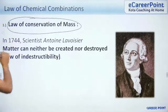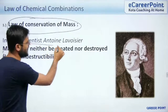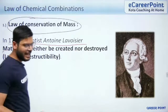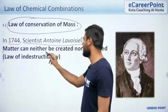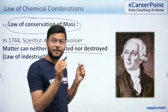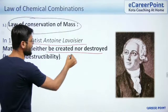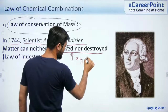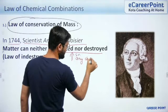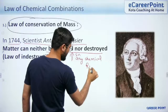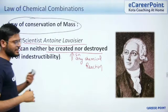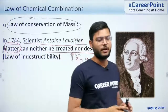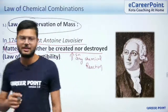In 1744, scientist Lavoisier suggested that matter can neither be created nor destroyed. What does it mean? It means that in any chemical reaction, any matter can neither be created nor destroyed. We will try to understand this with one example.